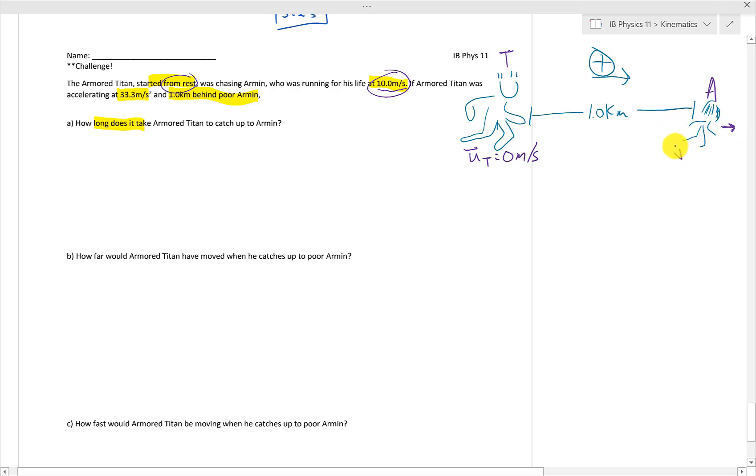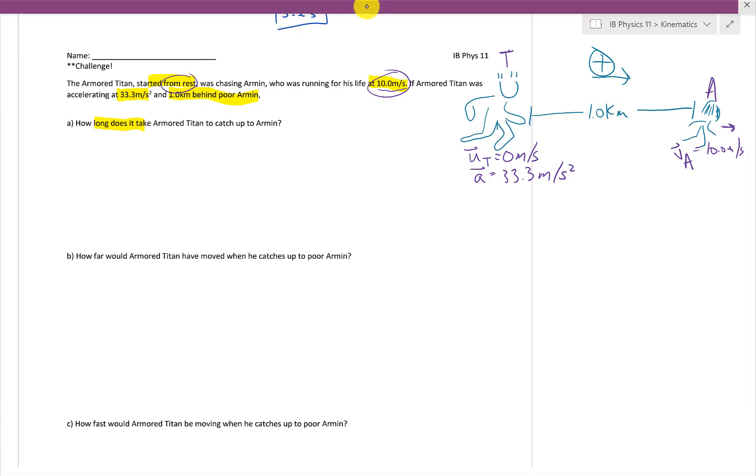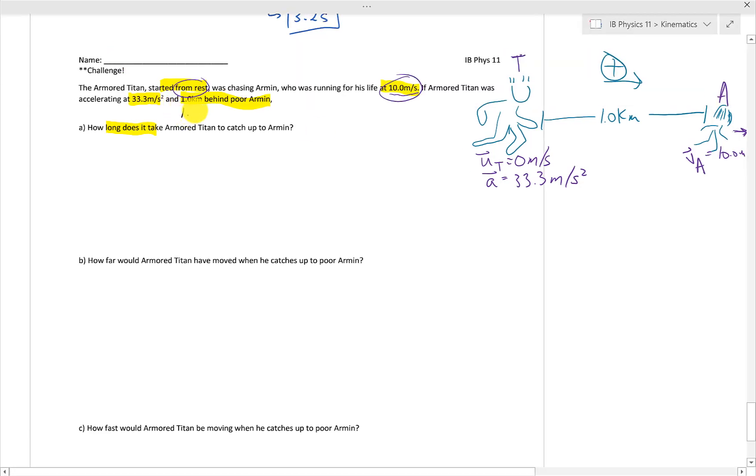Armin apparently was already running for his life at 10 meters per second. It doesn't say in the question that he is accelerating, so we can safely assume that he is running at 10 meters per second at constant speed. And he's only human, right? So there's no way that he can go really much faster than that, potentially. So his velocity for Armin is 10 meters per second.